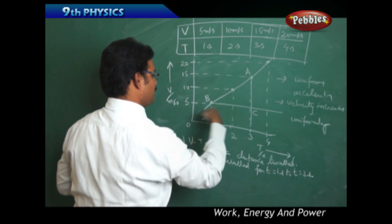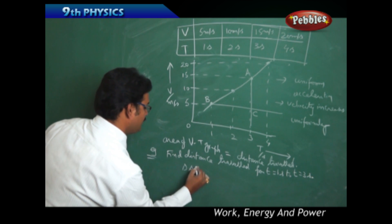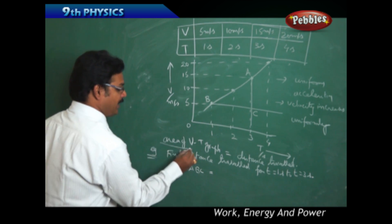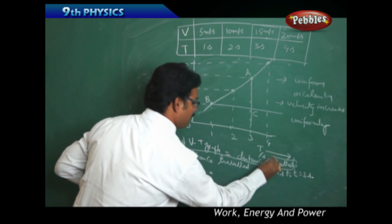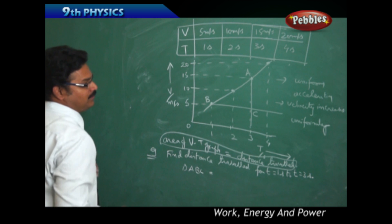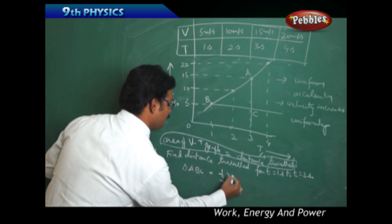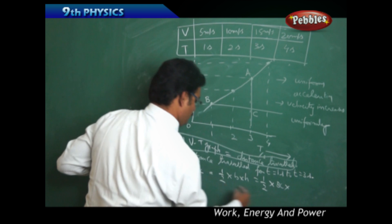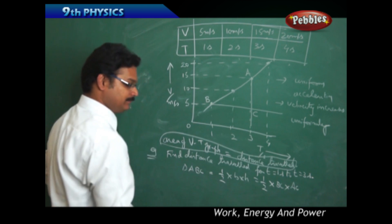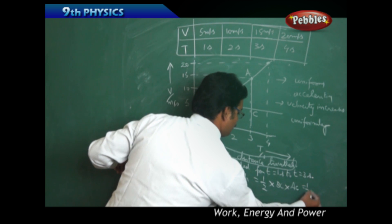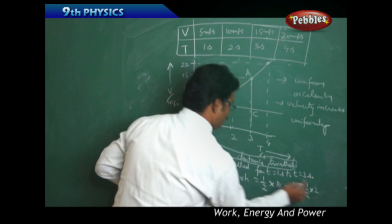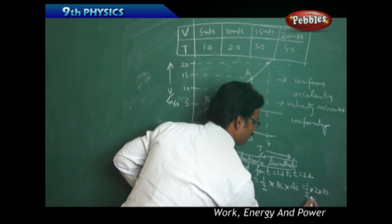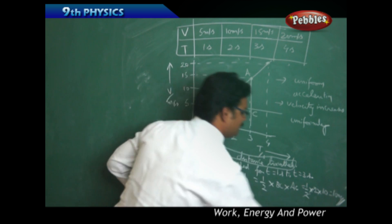These points form a triangle ABC. After taking the shape, you use the formula: area of the VT graph equals distance traveled. The area of a triangle is half times base times height — so half times BC times AC. BC is 3 minus 1 equals 2, and AC is 15 minus 5 equals 10, giving an answer of 10 meters.